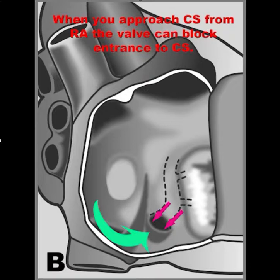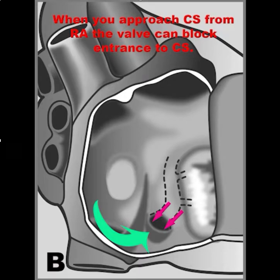Again, if you approach the CS from the right atrium and you have a valve, then the Thebesian valve can block your entrance to the coronary sinus.